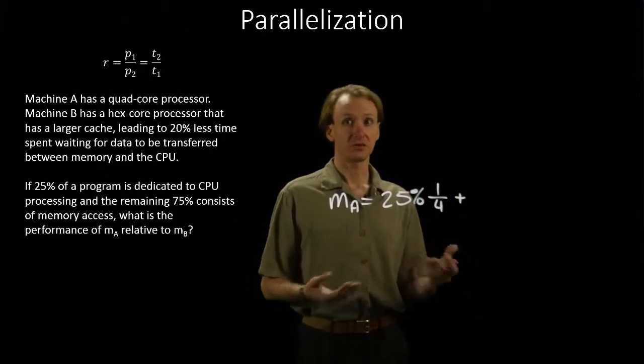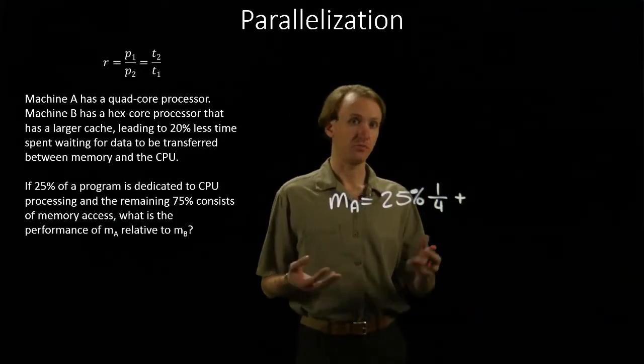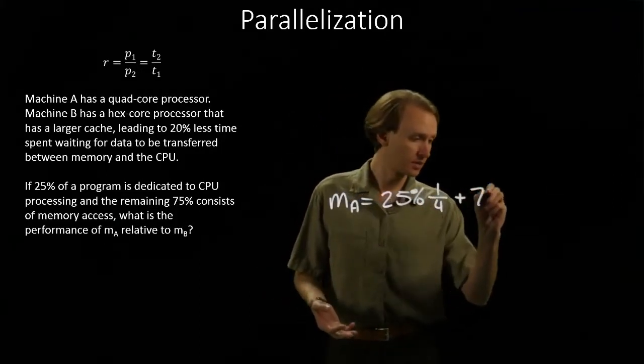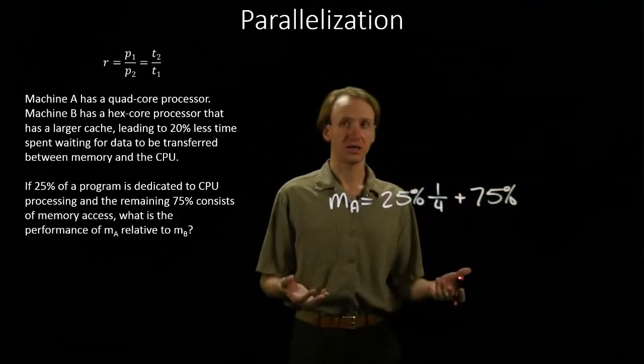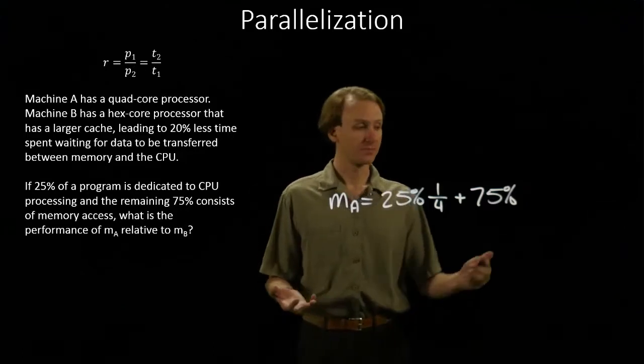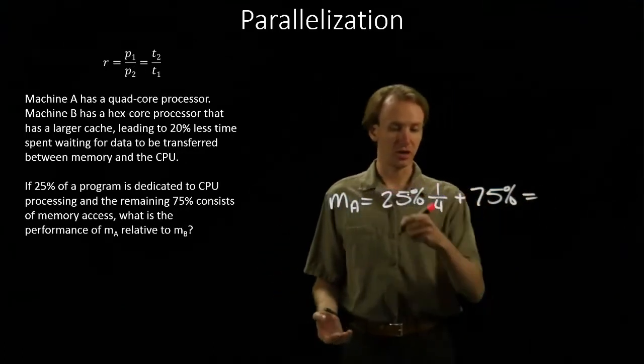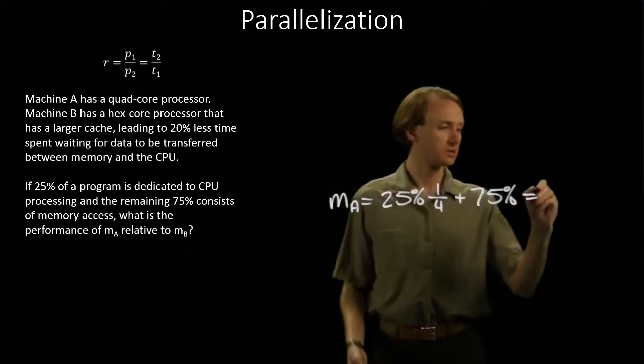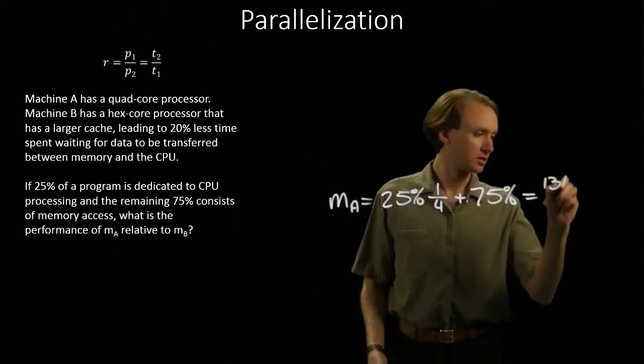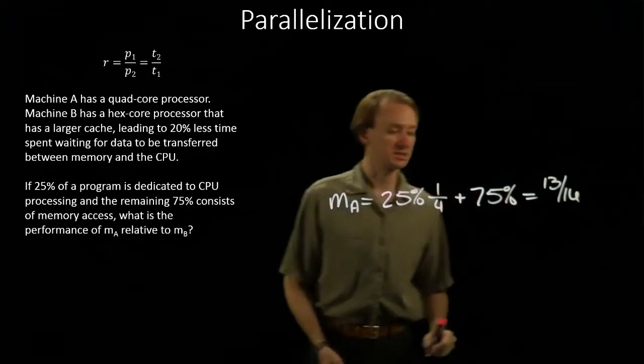So that means that the other 75% of my instructions are memory instructions. And machine A doesn't get any sort of benefit for these instructions. So I have one-fourth times one-fourth is one-sixteenth, plus twelve-sixteenths gives me thirteen-sixteenths.